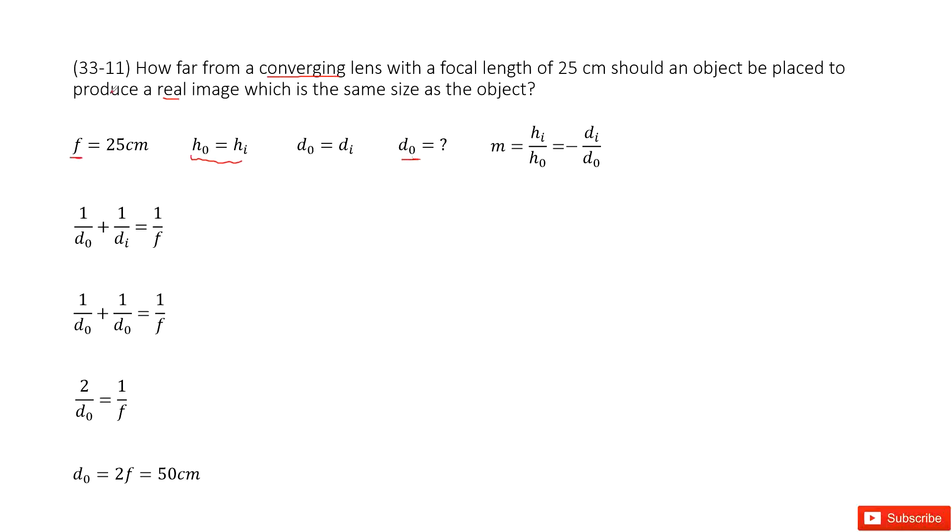We know the focal length, and we need to know the object distance. Normally we write down the thin-lens equation. This is the equation about the relationship between the object distance, image distance, and focal length.